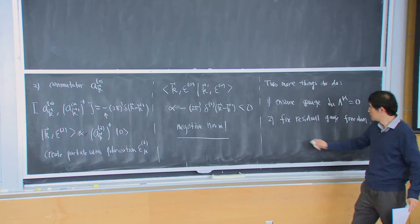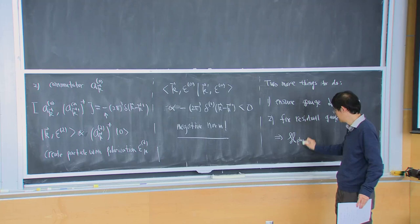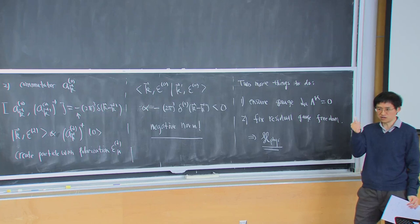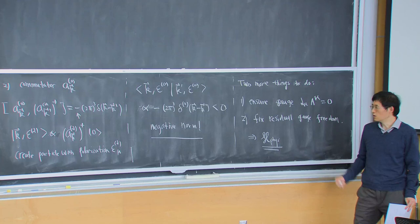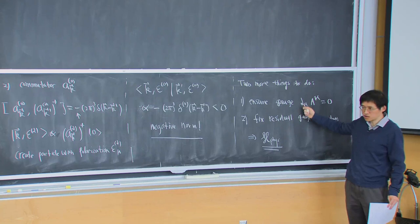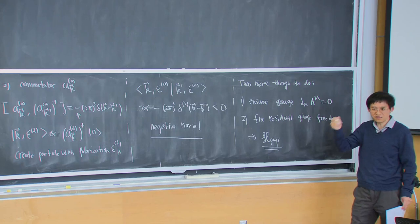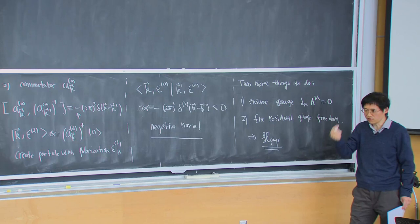When you do these two steps, you will get the physical Hilbert space, which will contain indeed only two transverse massless degrees of freedom, and the two extra degrees of freedom get removed. In the past I described this procedure in detail in class, but later I put it in the problem set, and that worked better — it forces you to go through it and think carefully.